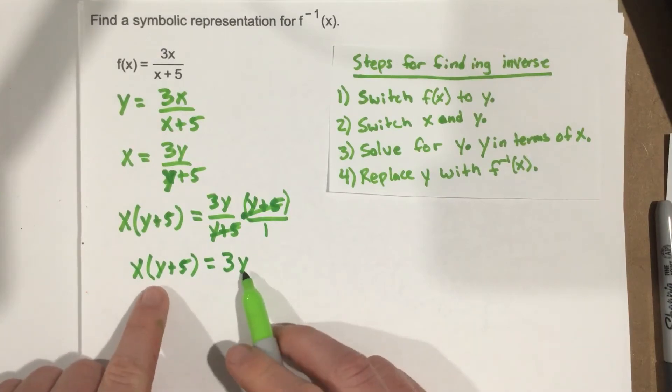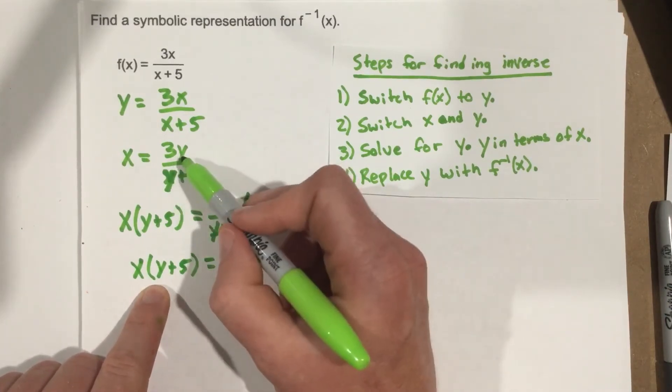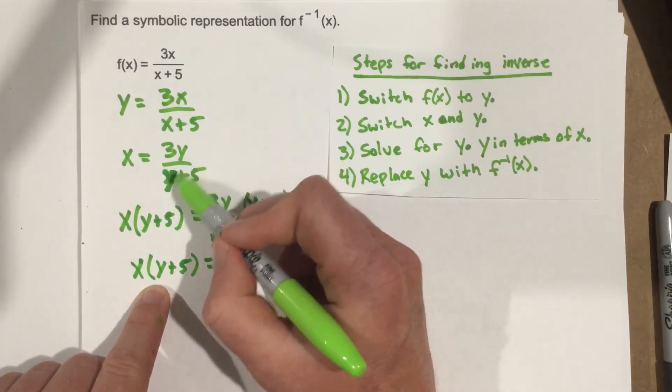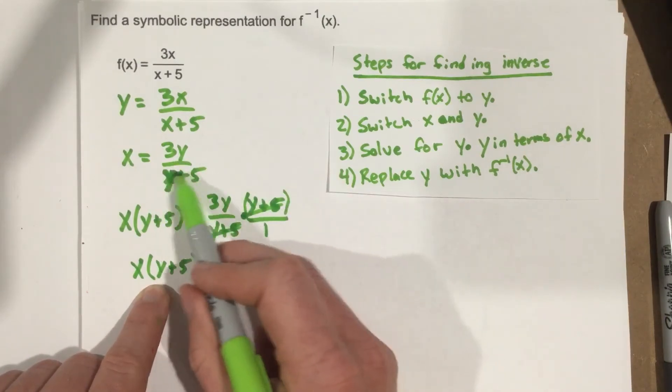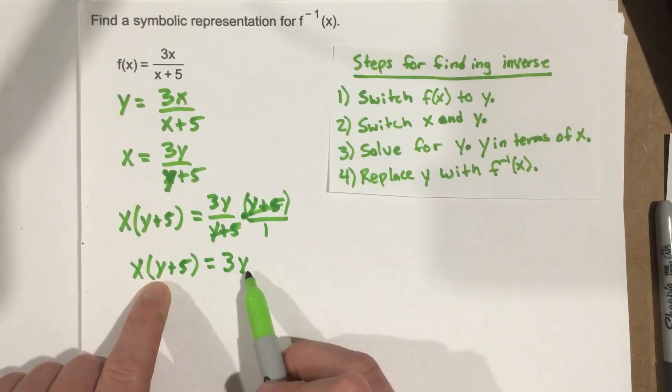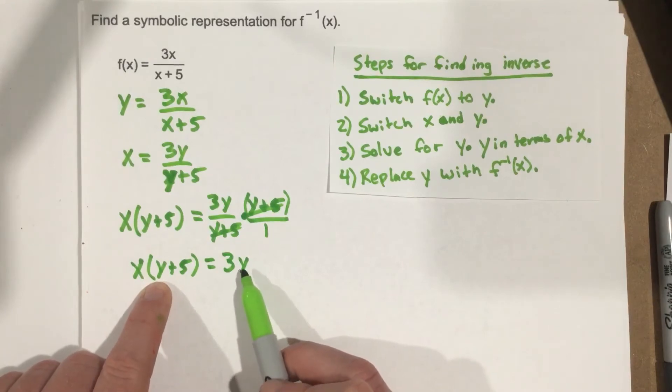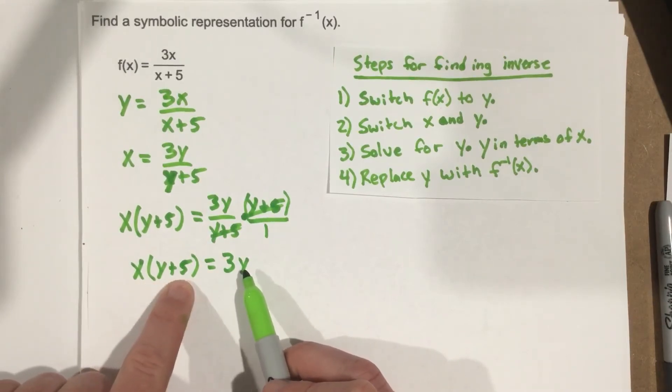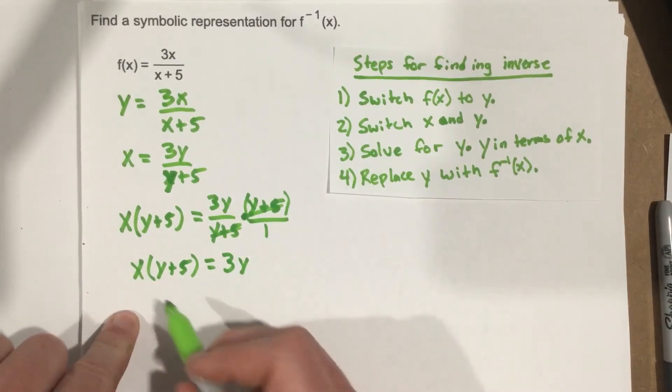Now, I have a y on each side, which is an issue. Because I also had y in the numerator and denominator here. I canceled this denominator, and then it created a different issue where the y's are on opposite sides. We can solve this, though, by distributing x first, and then combining some like terms.